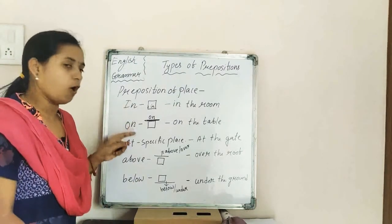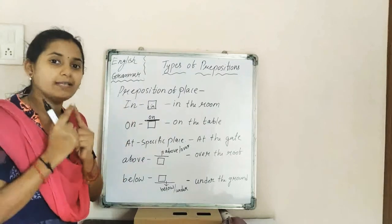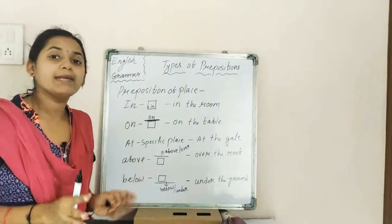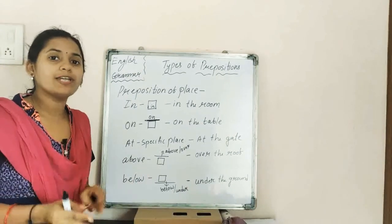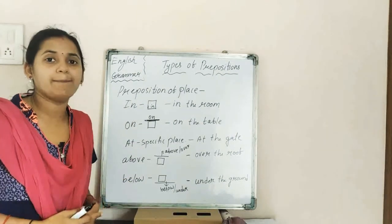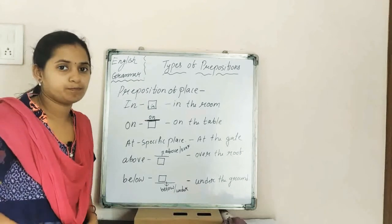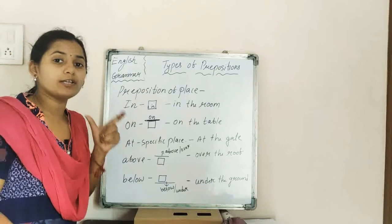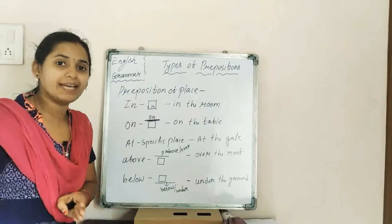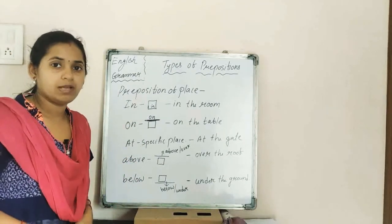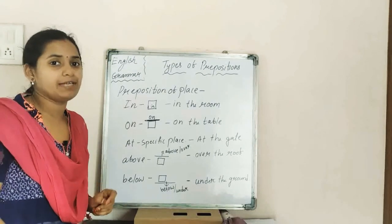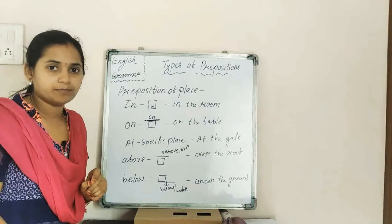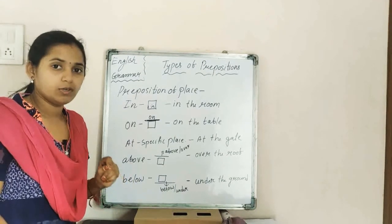Moving to 'at' as a place preposition: it is used when talking about any specific place. For example, I am waiting at the gate. At the cinema hall. At the park. When talking about a particular specific place, we use 'at' before it.